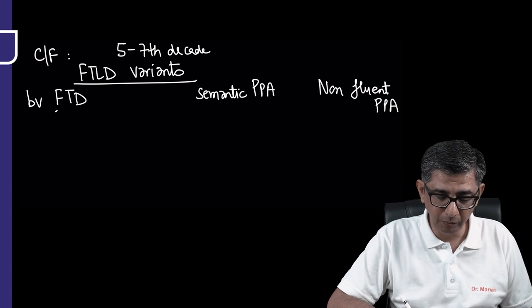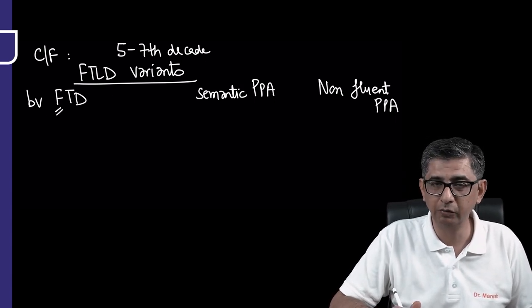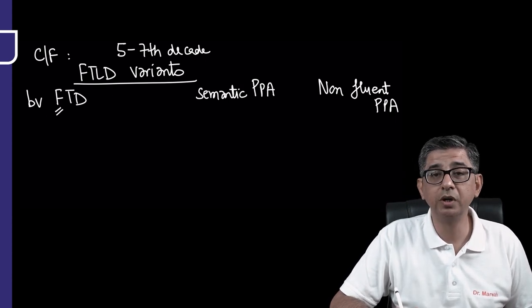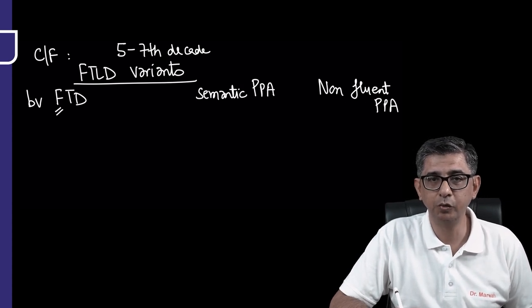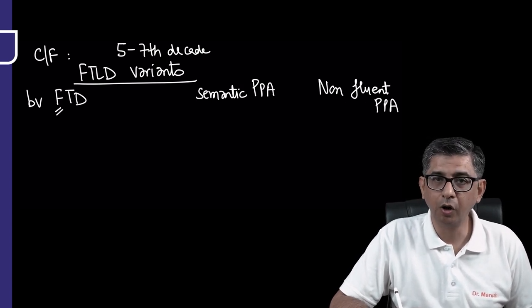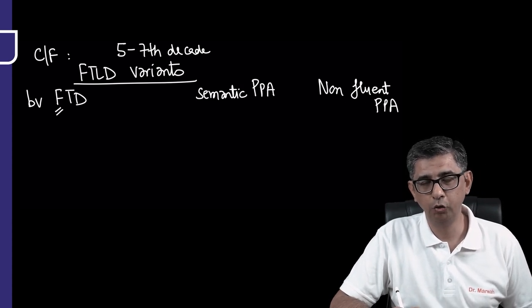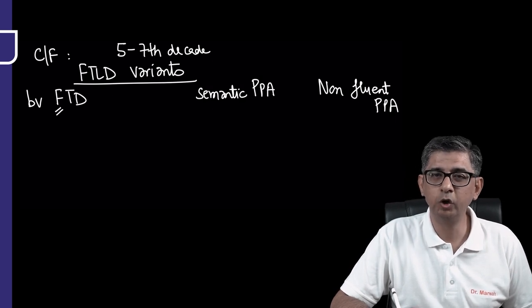The main problem with the behavioral variant is that the frontal lobe is predominantly involved. Frontal lobes play an important role in social graces - suppose you're in public and by mistake say a cuss word or the wrong word in front of parents, you suddenly feel ashamed.